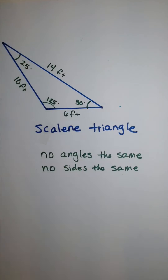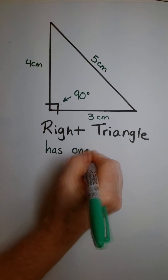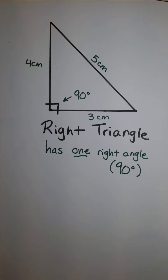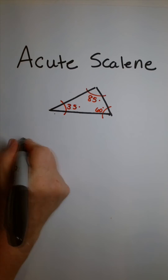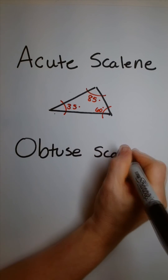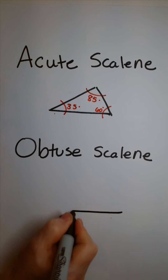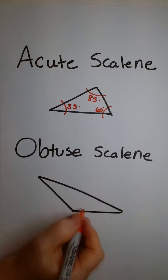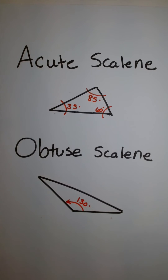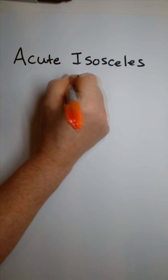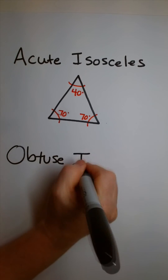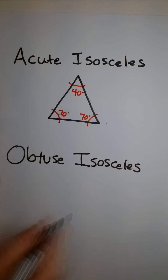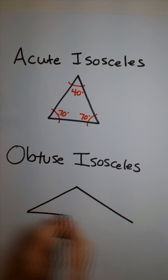A right triangle has one right angle, and we use them all the time. Acute triangles mean that the angles inside the triangle are all less than 90 degrees. An obtuse triangle has only one angle that's greater than 90 degrees.